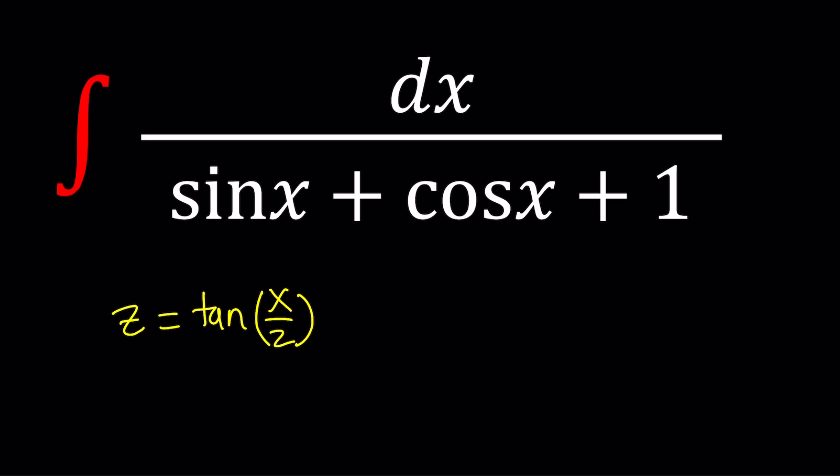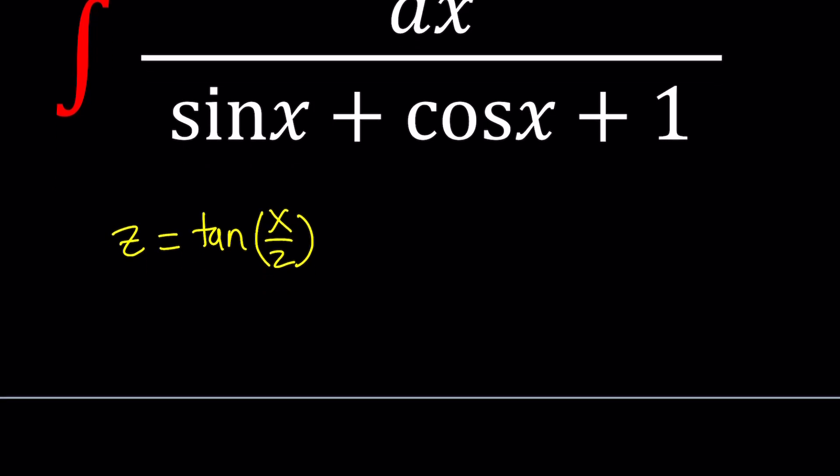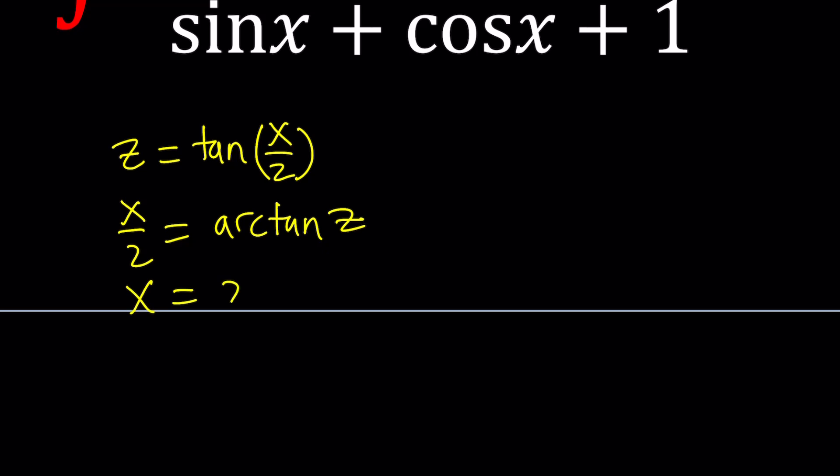Sine x and cosine x can both be written in terms of half angles. There are half angle and double angle formulas, right? So, let's go ahead and first isolate x from here. x over 2 is just going to be arc tangent of z, and then we can write x as 2 times arc tangent of z.